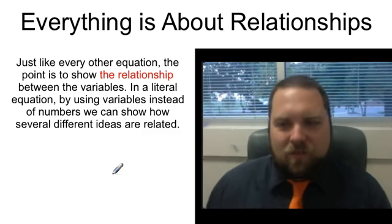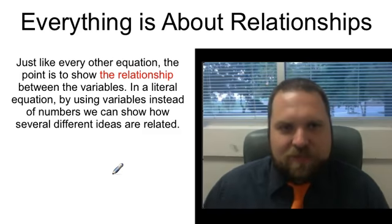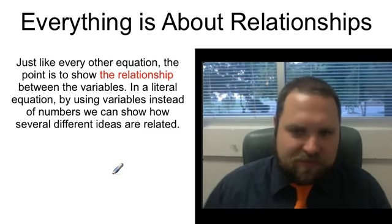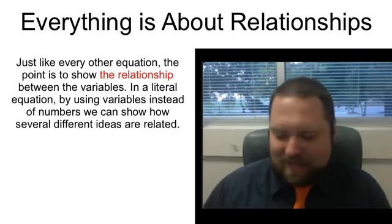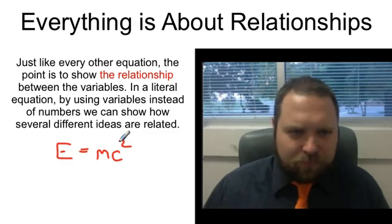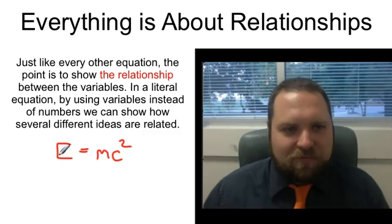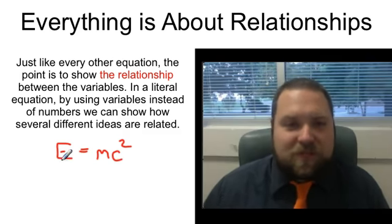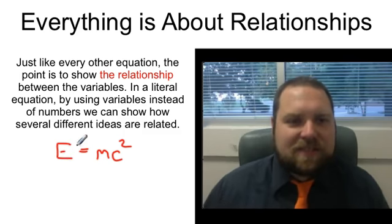Just like every other equation, the whole point of this is to show relationships. And in a literal equation, we've got nothing but variables. So we're showing nothing but all these different relationships between these ideas. So just to give you a classic example of a literal formula, is this formula right here, which you can probably tell me a little bit about in terms of where it comes from. This is Einstein's formula for the equivalence of energy and mass made famous by his theory of relativity and is like the one literal equation that you can count on pretty much everybody having heard.